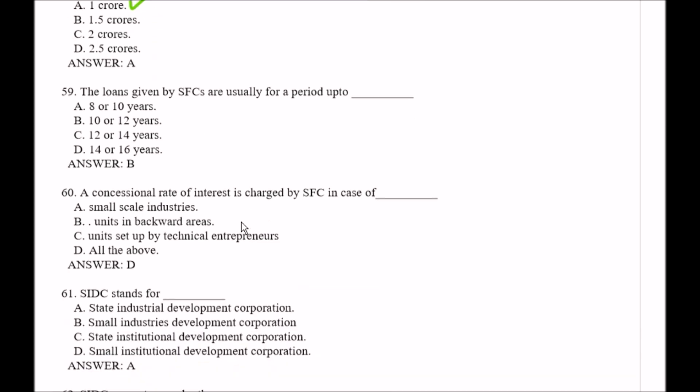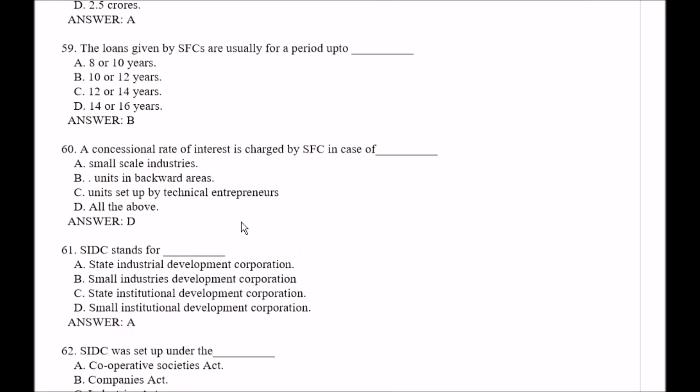Question number 59: The loans given by SFCs are usually for a period up to — Option A, 8 to 10 years; Option B, 10 or 12 years; Option C, 12 or 14 years; Option D, 14 or 16 years. The right answer is Option B, that is 10 or 12 years.